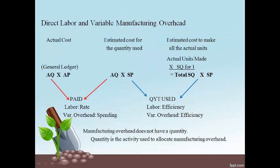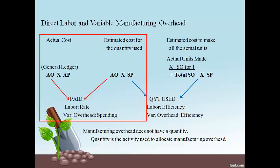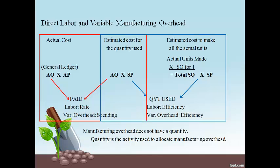Direct labor and variable manufacturing overhead are computed using the same format as direct materials. However, direct labor and manufacturing overhead are not put on the shelf in a later period, so there is only one AQ times SP in the middle because the actual quantity purchased and used is the same. The left side captures the difference in cost from paying more or less, and the right side captures the difference from using more or less.